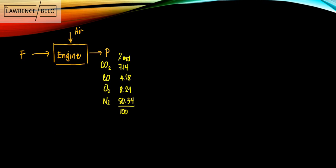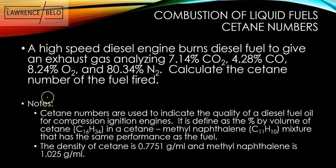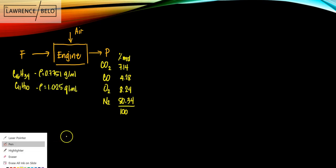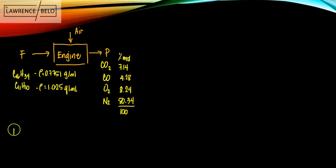Also given is that for the fuel, this consists of cetane C16H34 and C11H10. You're given that the density for the cetane and the density for the naphthalene are 0.7751 gram per ml and 1.025 gram per ml. So what would be the best basis in this case? Since you're given the complete analysis of the stack gases, the best basis would then be the dry stack gases. So in this case, let's try 100 moles of dry stack gas.